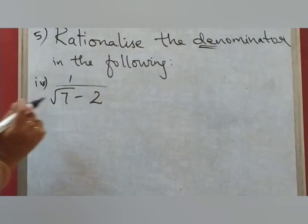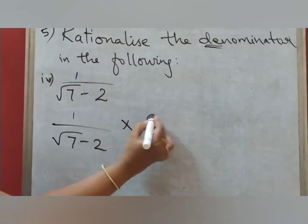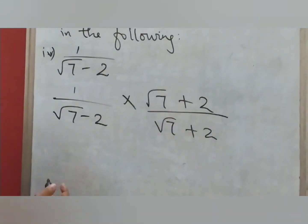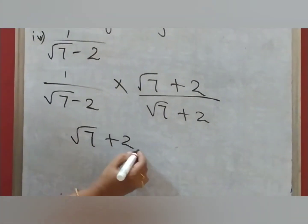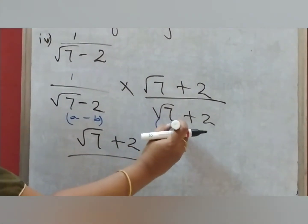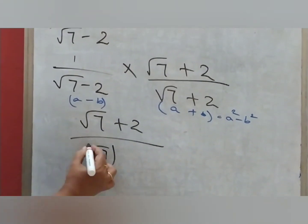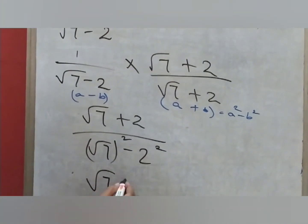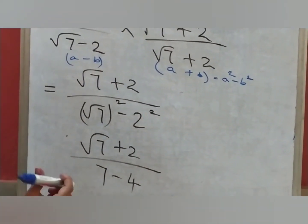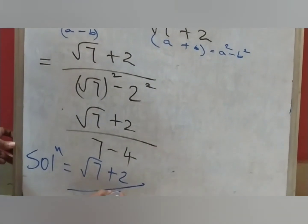The fourth question says 1 by (√7 − 2). The denominator is (√7 − 2). Multiply and divide by (√7 + 2). The numerator is 1 into (√7 + 2) = (√7 + 2). The denominator is in the form (a − b)(a + b) = a² − b², which gives (√7)² − 2² = 7 − 4 = 3. So the solution is (√7 + 2) divided by 3.